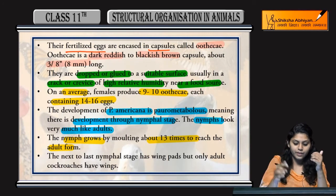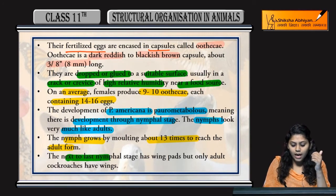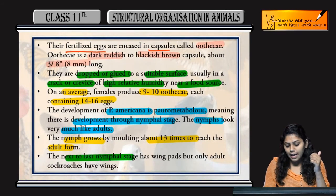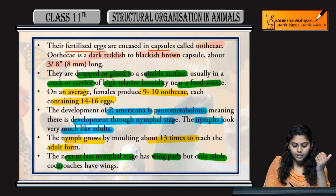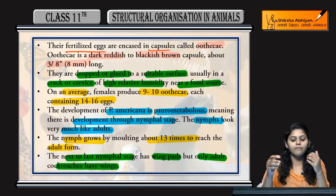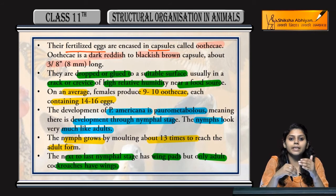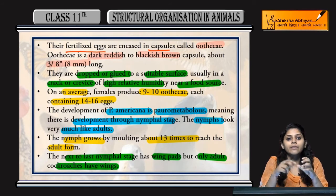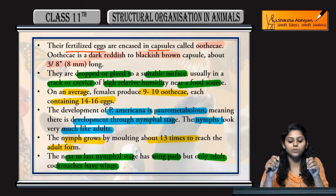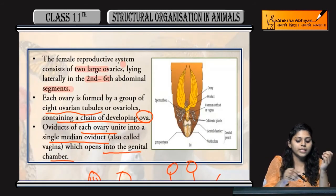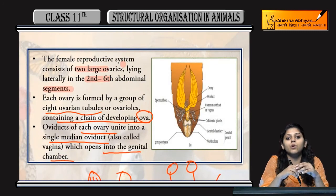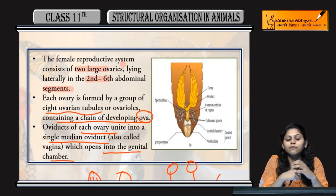The next-to-last nymphal stage has wing pads, but only adult cockroaches have wings. This was all about the reproductive system of cockroaches, both male and female.